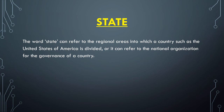The word 'states' is very broad and can be defined in many ways. For our purposes, we define it as the regional areas into which a country such as the United States of America is divided, or it can refer to the national organization for the governance of a country. In Britain, which is a constitutional monarchy, the word 'states' is replaced with 'crown,' seen in crown courts, crown prosecution, and Rex or Regina versus an accused. The state is a far broader concept than the government.